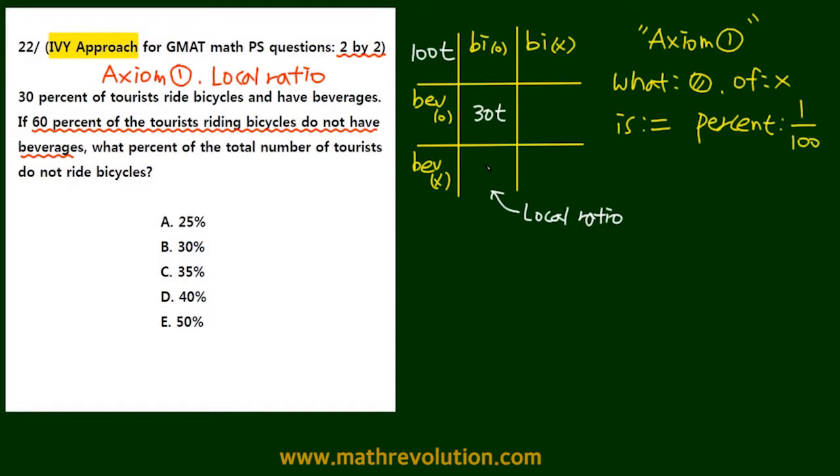So it says, if this is XT, people who ride bicycles without any beverages, then 30T is 40% and XT is 60% of the total. So 30T is 40% and XT is 60%. So again, we're not dealing with the total group or the total number of tourists, but we're dealing with the proportion of a group within the total. So 30T is 40%, XT is 60%.